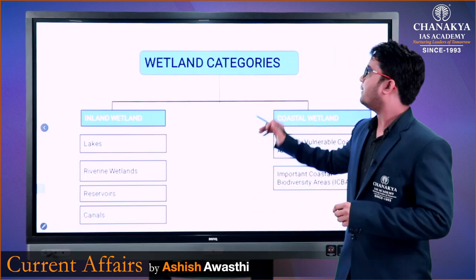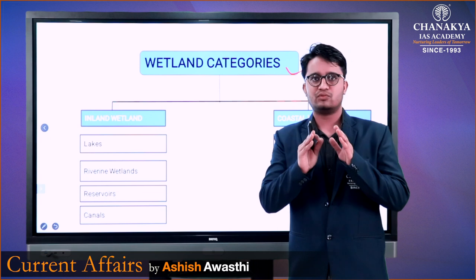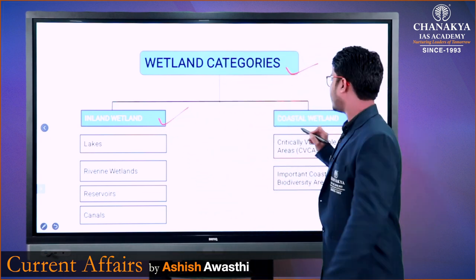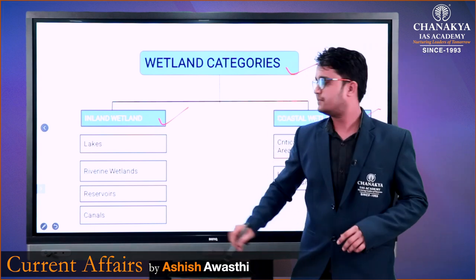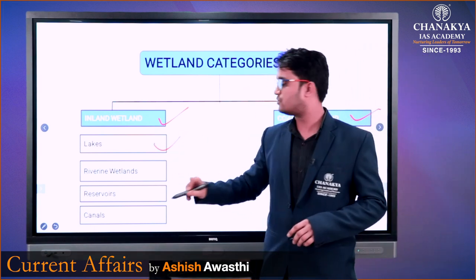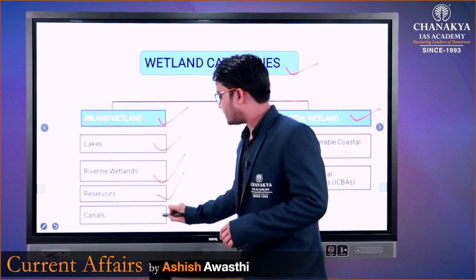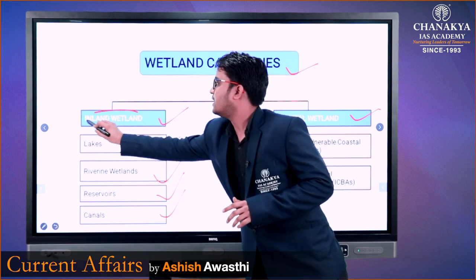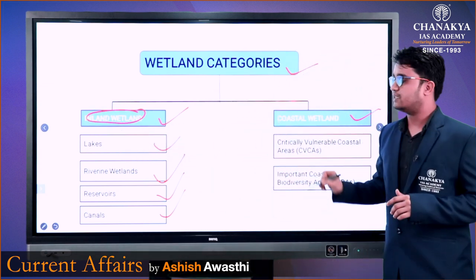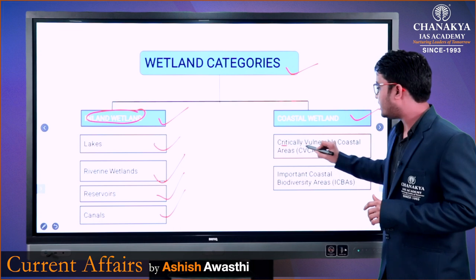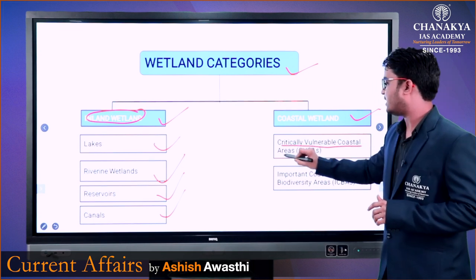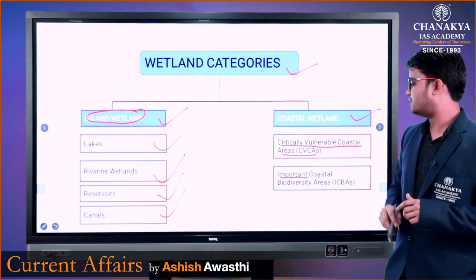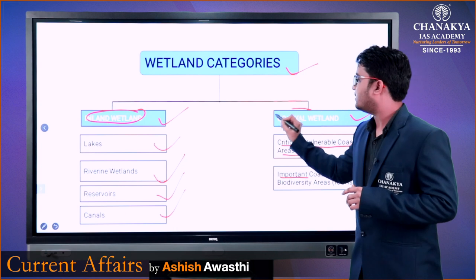अब बात करेंगे Wetland Categories की। Wetland Categories को दो categories में बाँटा गया है — पहली Inland Wetland और दूसरी Coastal Wetland। Inland Wetland में झीलें, नदियों द्वारा बनाई गई आर्द्रभूमि, बाँध, और नहरें भी शामिल हैं, साथ ही CBCAs। Coastal Wetland में Important Coastal Biodiversity Areas आ जाएंगी।